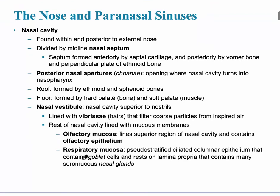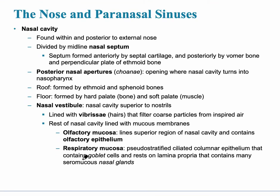The pleura is very important in the function of the lungs. The nasal cavity is found within the posterior external nose and is divided by the nasal septum. At the top of the nasal region is the olfactory mucosa, which contains olfactory epithelium and respiratory mucosa. When inhaling strong chemicals, these chemicals could temporarily cause anosmia — the lack of smell — if those chemicals are really pungent.